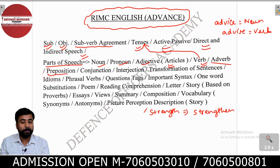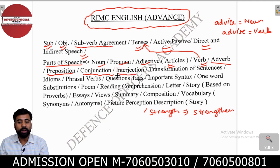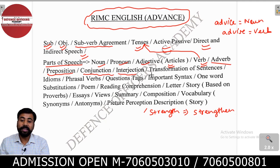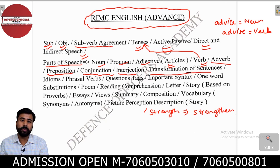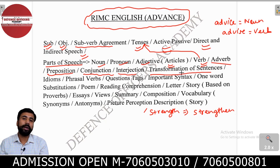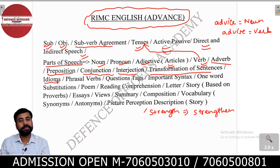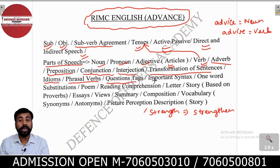Then adverbs are there, which are very important. Prepositions — a question was based on prepositions. Conjunctions, interjection — basically all eight parts of speech are very important in English. Everything in English comes from these. Then there are transformation of sentences — very important. Once you learn tenses, parts of speech, direct-indirect, active-passive, you will be able to do transformation of sentences from one form to another.